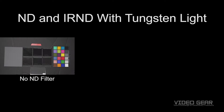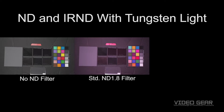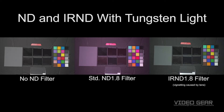In our first example, we're going to show you IR pollution using a number of fabric swatches under tungsten light. The first example is without an ND filter, showing that all the fabric swatches are still black, just as they appear in person. When we put a standard ND filter in and keep the same white balance, the fabric swatches turn various degrees of magenta, since tungsten lights output a lot of infrared. When we use the Format Firecrest IR ND filter and keep the same white balance, the fabric swatches are back to how they appear in person.